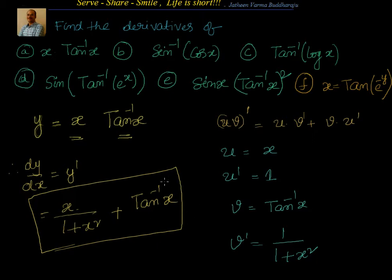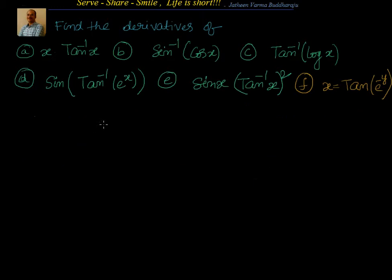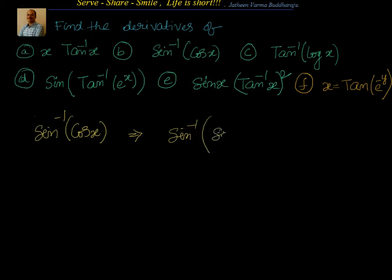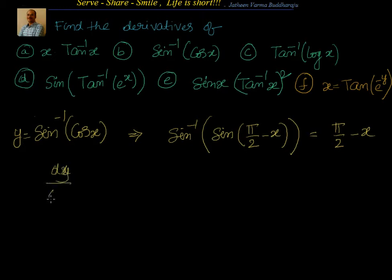Let's go to the next one: find the derivative of sin⁻¹(cos x). One approach is to convert cos x into a sine expression. We know cos x = sin(π/2 − x), so sin⁻¹(cos x) = sin⁻¹(sin(π/2 − x)) = π/2 − x. Then if y = π/2 − x, dy/dx = 0 − 1 = −1.